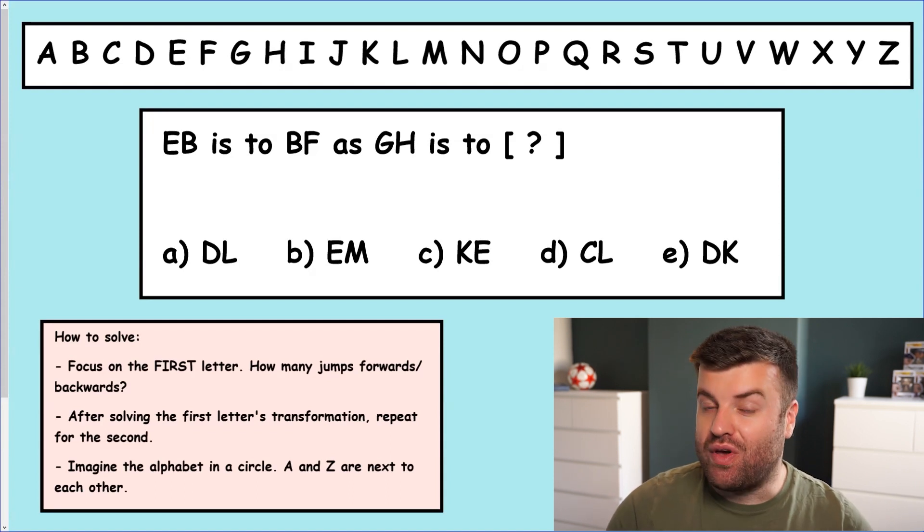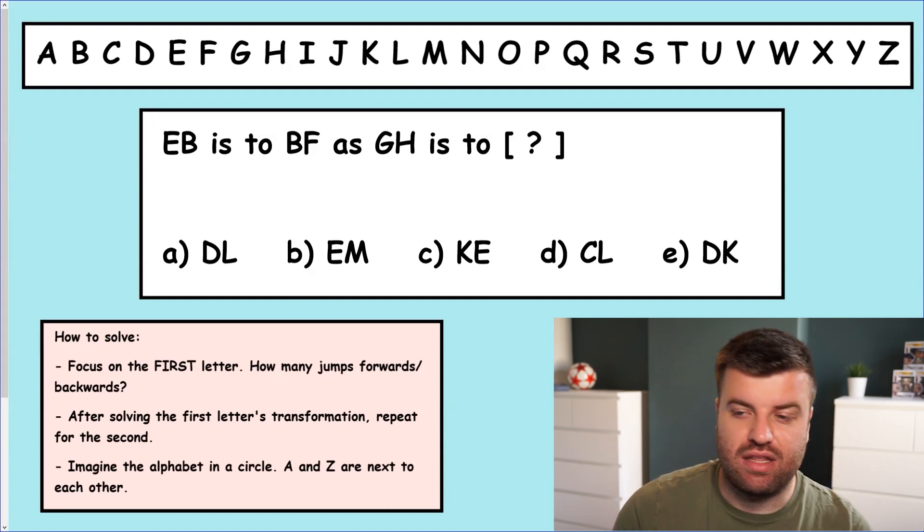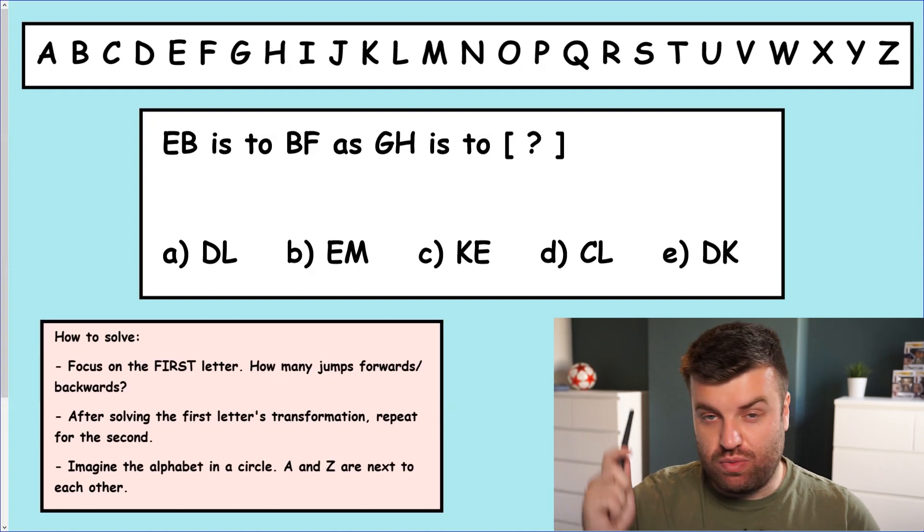We're given an alphabet at the top. We are given the alphabet for a reason. We need to use it. It's going to help us solve these questions. So make sure your children are in the habit of using that alphabet to solve these questions. What does the actual question say though? EB is to BF as GH is to what?